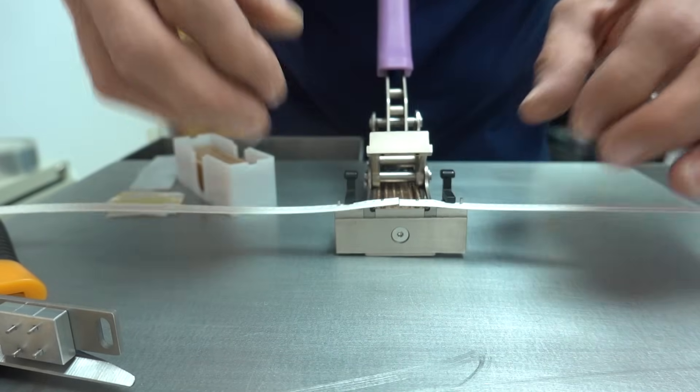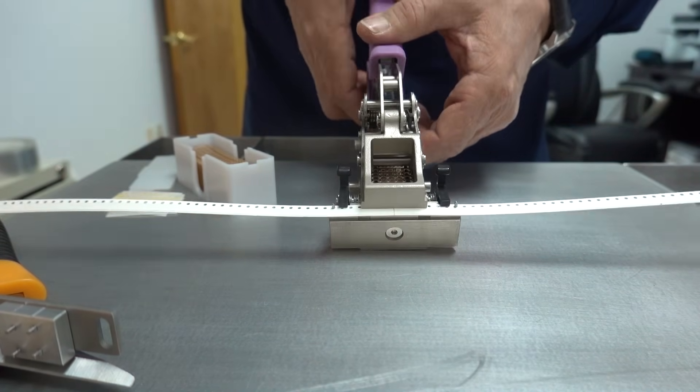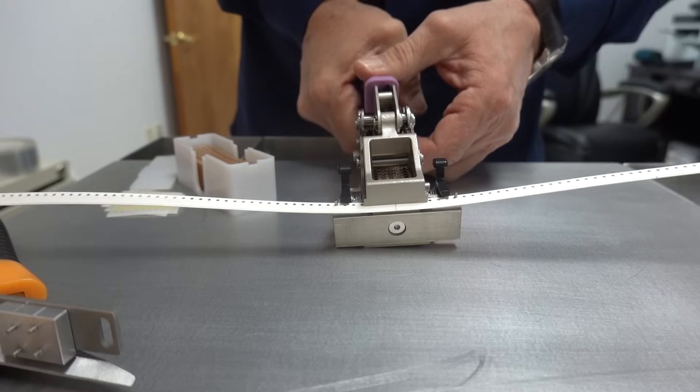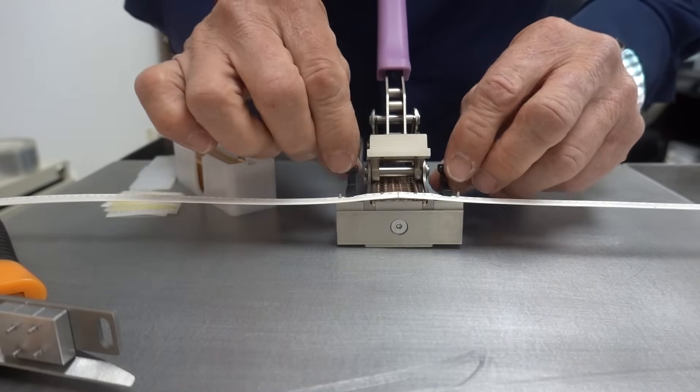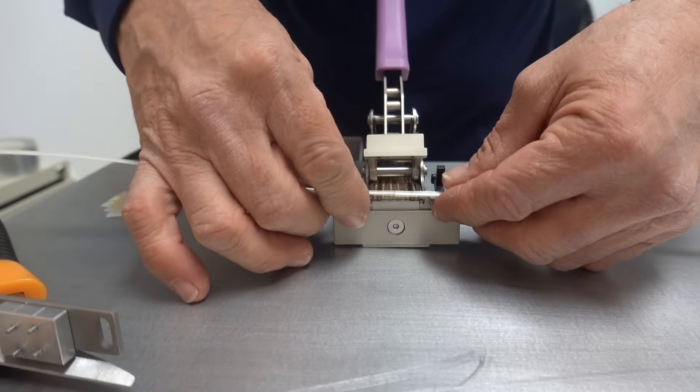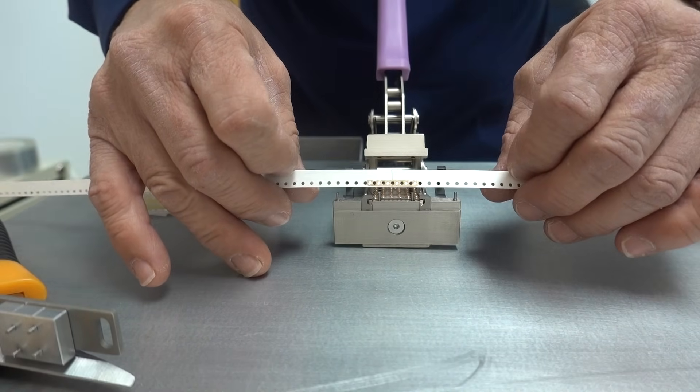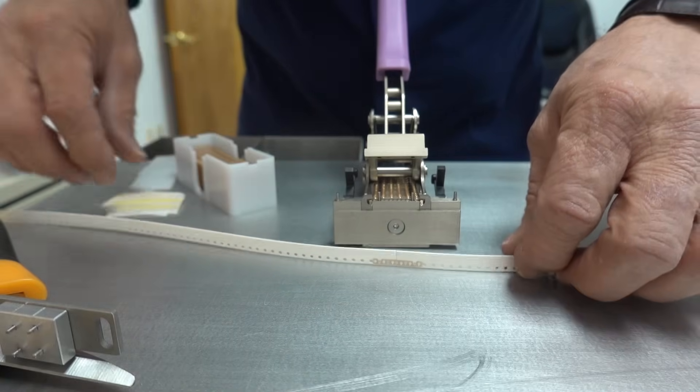Put the hold down right there and then what we will do is we will crimp the tool. You squeeze it all the way to the bottom and so what it does is it attaches your splice on the bottom of the carrier tape.